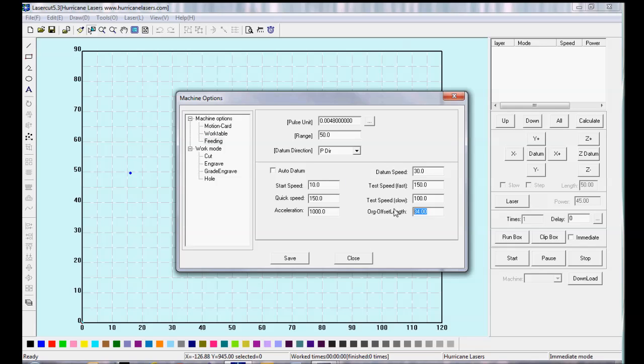In the field labeled Origin Offset Length, enter a few digits more or less, further or closer to the material than you need to be according to the mark on your focus tool.